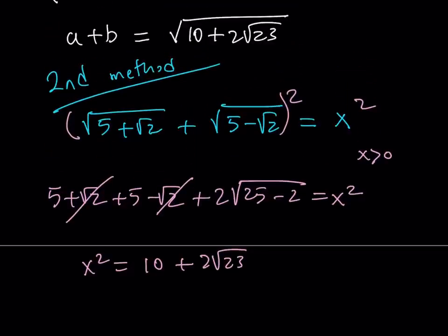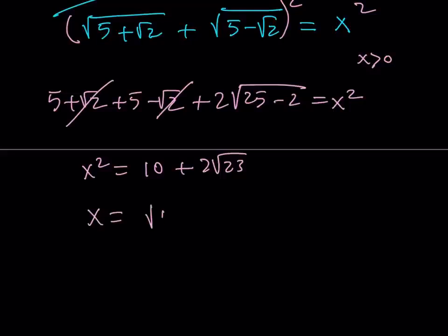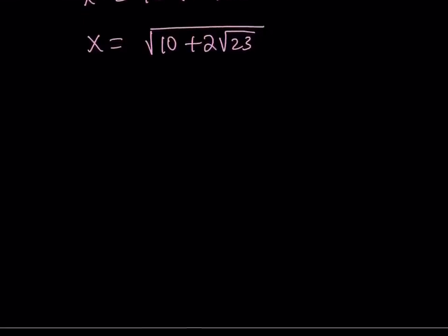And, from here, remember, our goal is to solve for x, because that's what we're looking for. And, x just becomes the square root of this expression. Therefore, the answer is the square root of 10 plus 2 times square root of 23. Whatever you see is going to be the answer.